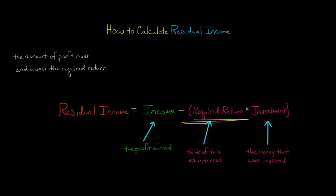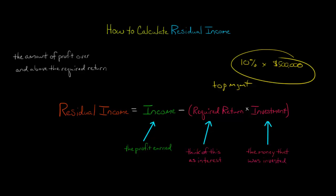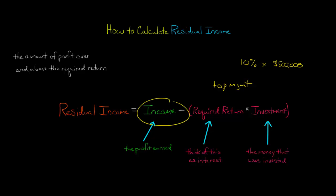When I'm talking about required returns, this would be set by top management. So top management would say to the departments, we expect that you have a return of at least 10% on any investments we make in the department. So if there's $500,000 of capital allocated to the department by corporate, then they would expect the 10% return — so $50,000 would be this part. And if the division had $80,000 of profit, you would take the $80,000 minus this $50,000, and they'd have $30,000 of residual income.